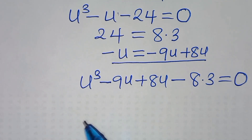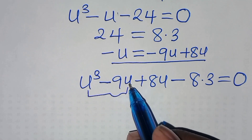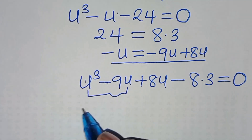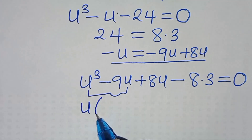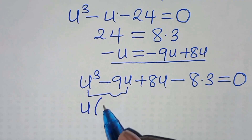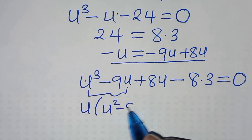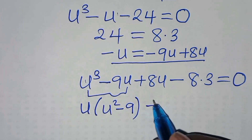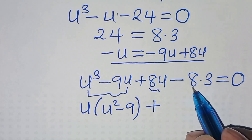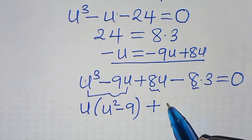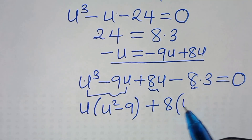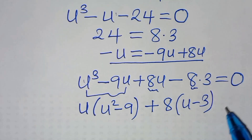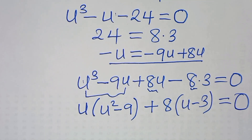Now, from this particular part here, u is common so we can factor out u, giving us u into the parentheses u squared minus 9. Then 8 is common, so we can factor out 8, giving us 8 times u minus 3. This is equal to 0.